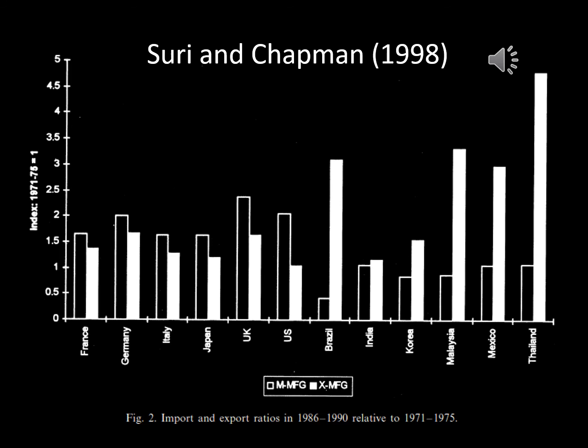This figure by Suri and Chapman shows how imports and exports of manufactured goods have grown or decreased from the early 70s to the late 80s. Manufacturing is often one of the more polluting industries, and we see that exports of manufactured goods have increased disproportionately in countries with lower average incomes such as Thailand, Malaysia, Brazil, and Mexico.